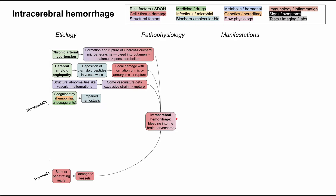There are also coagulopathies that can cause impaired hemostasis leading to intracerebral hemorrhage. One example is the hemophilias, which are genetic or hereditary disorders. Patients can also be on anticoagulants that prevent normal hemostasis. With impaired hemostasis, microtrauma accumulates in the vasculature, and if clotting cannot occur, that can lead to bleeding into the brain parenchyma.